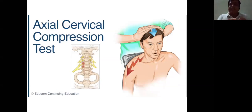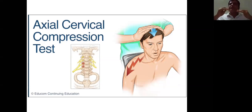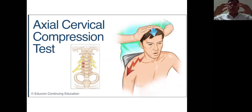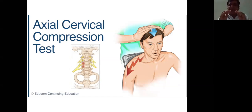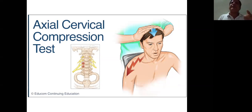The second maneuver is the axial cervical compression test. Have the patient sit, stand behind them, place both hands over the head, and give a gentle axial compression — don't push roughly. When you do axial compression, the foramen size shrinks and the intensity of radiculopathy increases. This is a nerve root tension sign.